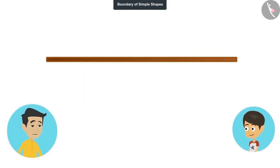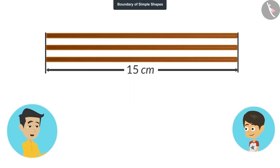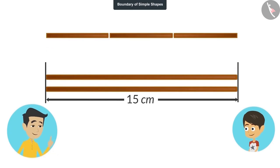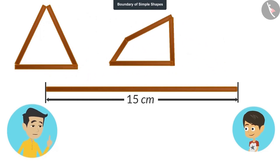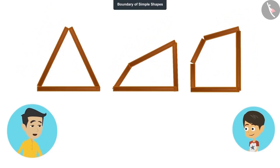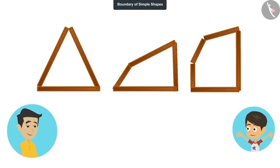I did not understand it properly. Look, I have three thin sticks of the same size — they all have the same length, 15 centimeters. Now I cut one of these sticks into three parts and make a shape from it. In the same way, I cut the other stick into four parts and make a shape from it. And finally, I cut the third stick into five parts and make a shape from it. Now there are three figures in front of you made from sticks of equal lengths. Can you tell the length of their boundaries? Yes, it is very easy — sticks of 15 centimeters each were used to make all three shapes, so the length of their boundaries will also be the same: 15 centimeters.